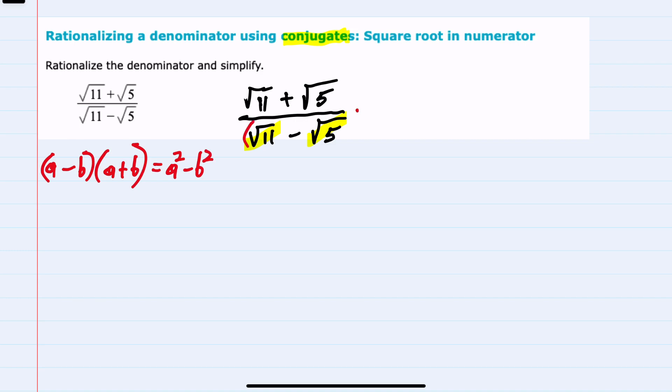Using this idea, we would like to multiply this bottom, the square root of 11 minus the square root of 5, by its conjugate, which is the square root of 11 plus the square root of 5.